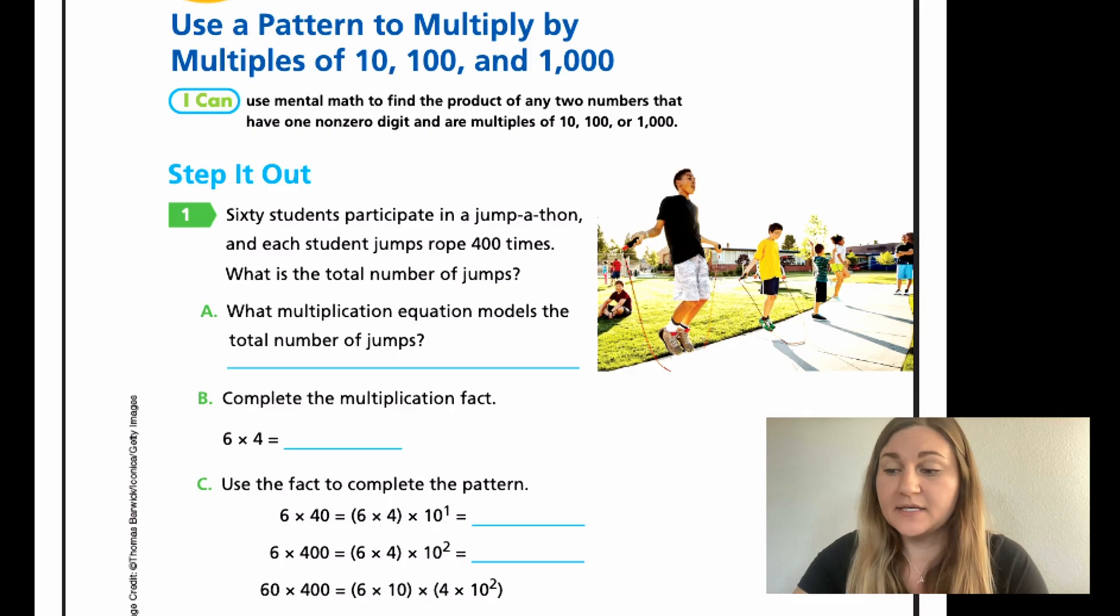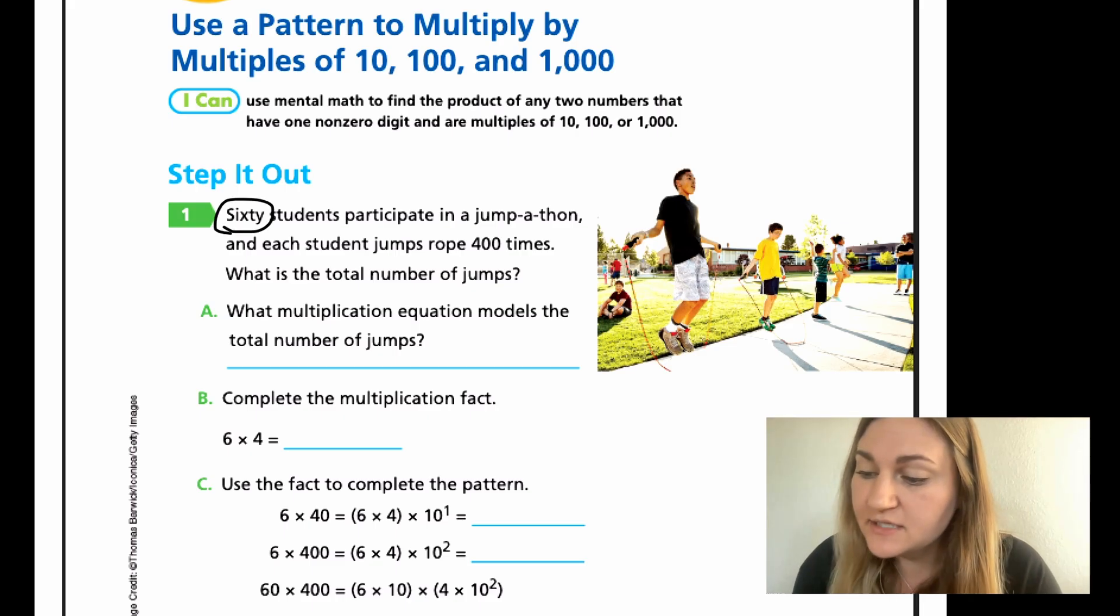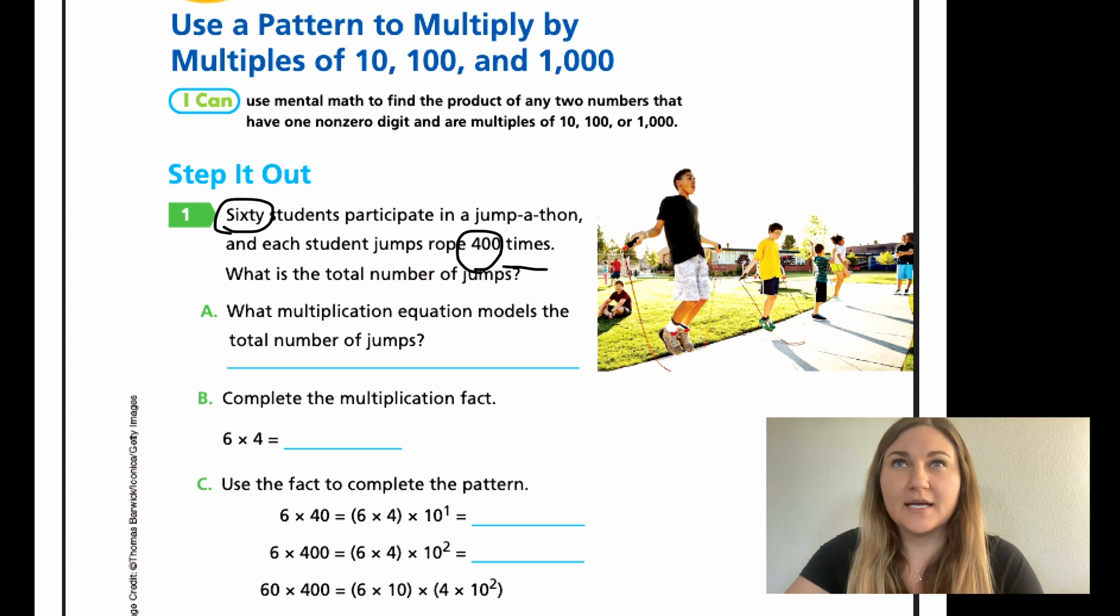The second time, I'm going to identify my numbers and operation. 60 students, there's my first number. Each student jumps rope 400 times. My 400 is my second number, and times means I am going to be multiplying in this problem.